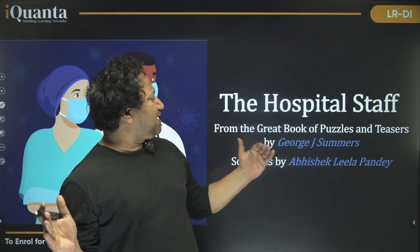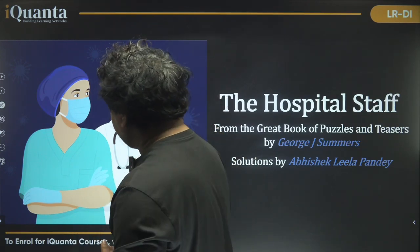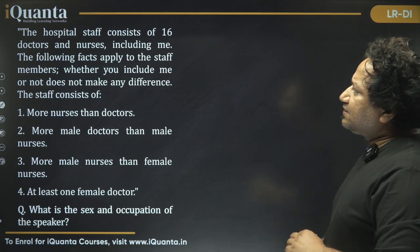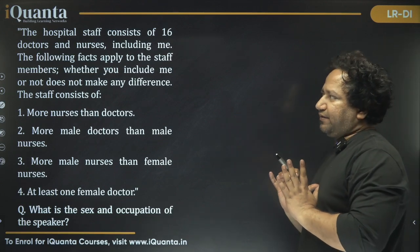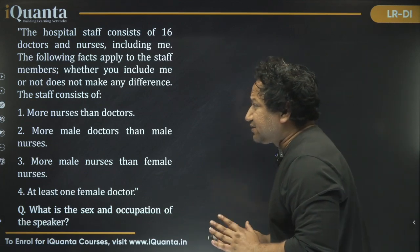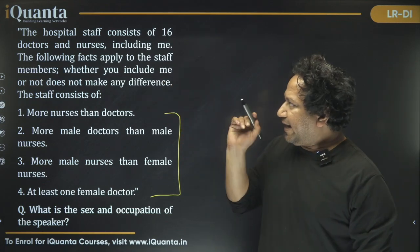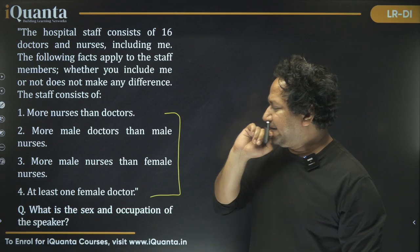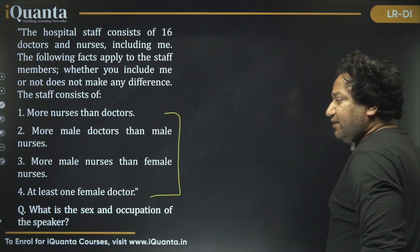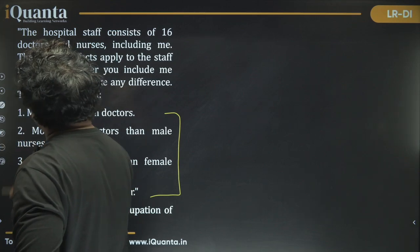Here we have the third puzzle from the great book of puzzles by George J. Summers. The hospital staff consists of 16 doctors and nurses including the speaker. The following four facts apply: more nurses than doctors; more male doctors than male nurses; more male nurses than female nurses; and at least one female doctor. Whether you include the speaker or not does not make any difference to these statements.